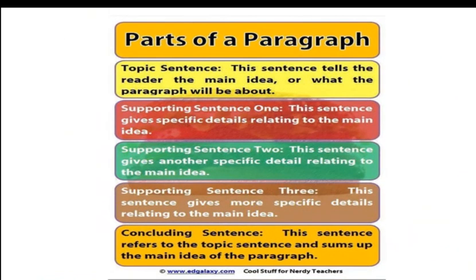Let's go into detail again. The topic sentence tells the reader the main idea, or what the paragraph will be about — for example, 'High self-confidence has several advantages.' Supporting sentence one gives specific details relating to the main idea. You can have up to three supporting sentences; for each one, give a detail and a supporting example. The concluding sentence refers back to the topic sentence and sums up the main idea of the paragraph.